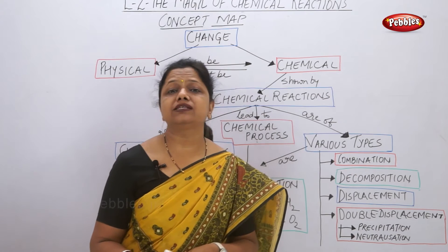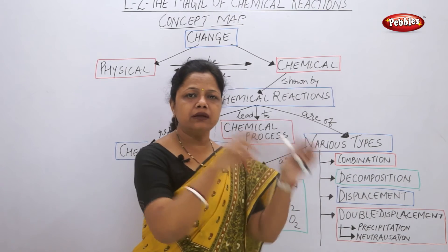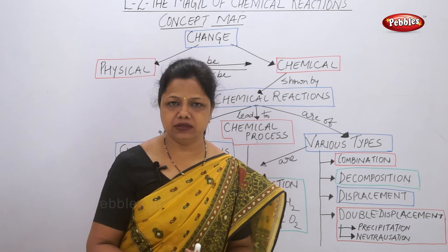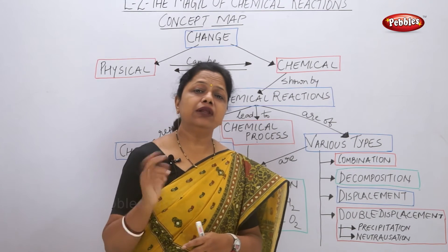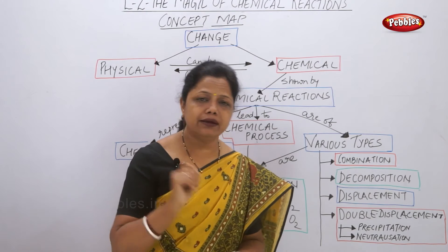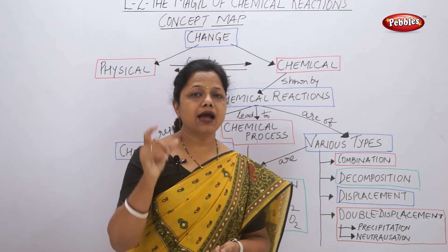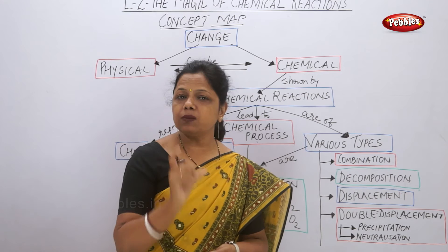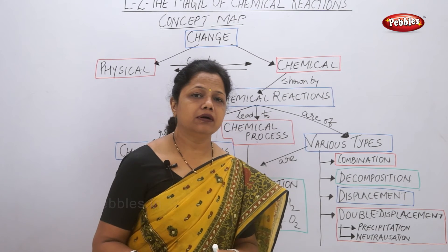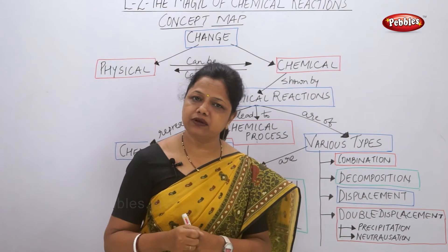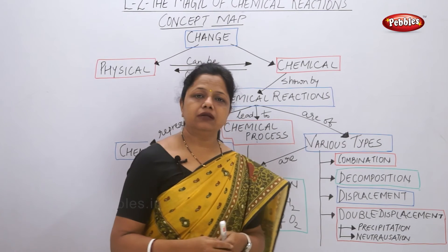The third type we studied was the displacement reaction. Displacement means moving a thing out of its place and bringing a new one. A displacement reaction happens between a metal and a compound. The metal displaces the metal in the compound only if it is more reactive. For example, an iron nail placed in copper sulfate solution displaces copper — since iron is more reactive than copper, it forms iron sulfate.